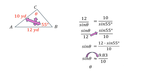The next step isolates theta by transferring the sine function to the other side using its inverse: sine to the power of negative one, also called arc sine. So theta equals sine⁻¹(9.83 / 10). Make sure your calculator is in degree mode. Computing this gives theta approximately equal to 79.42 degrees.